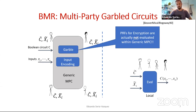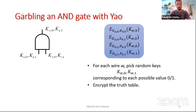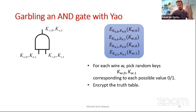This is something you can do because you have this vectorized version of Yao where you have one key per party. How does BMR work at the gate level compared with Yao? You cover the truth table of the gate, you have one key for every possible value on that wire — a key corresponding to the zero value and a key for the value one — you encrypt this truth table, permute the rows, and that's your garbled gate.